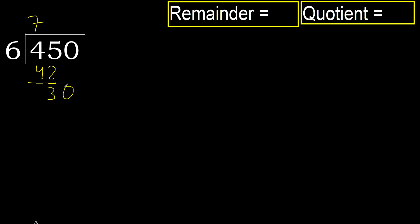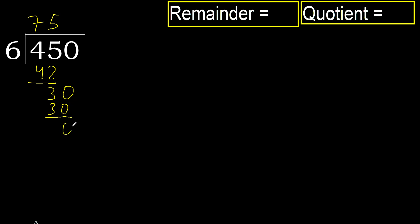Next: 30. 6 multiplied by 5 is 30, which is not greater. 30 minus 30 equals 0.